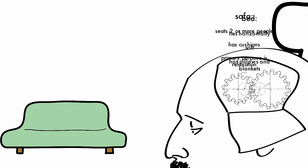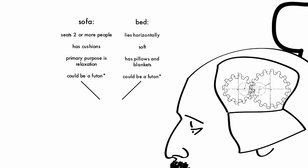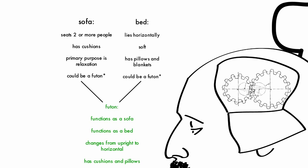If it comes close, you make subtle changes to your schema to include the new item. In this example, you now have a schema of a sofa that includes the traditional characteristics along with those of a futon.